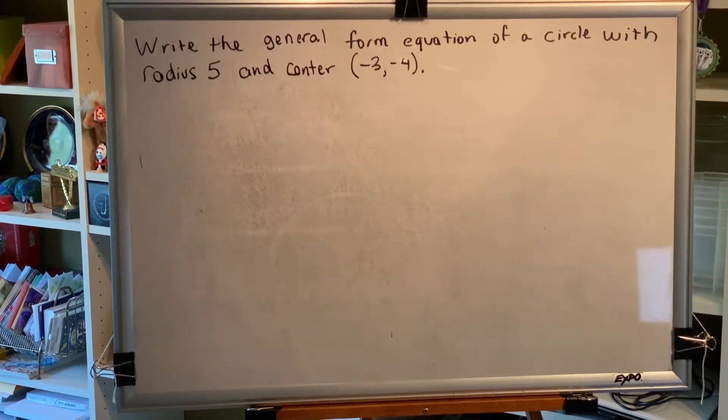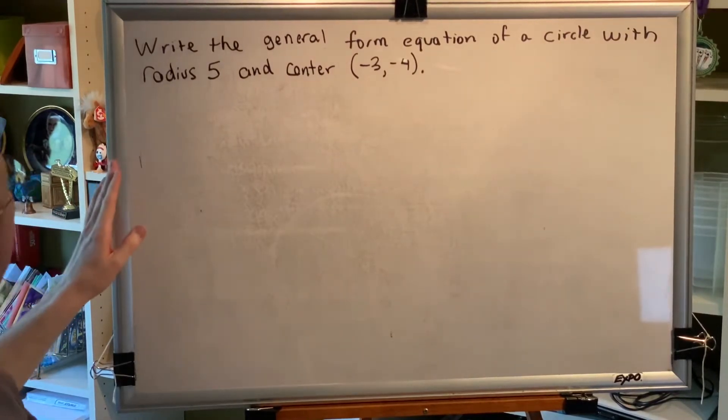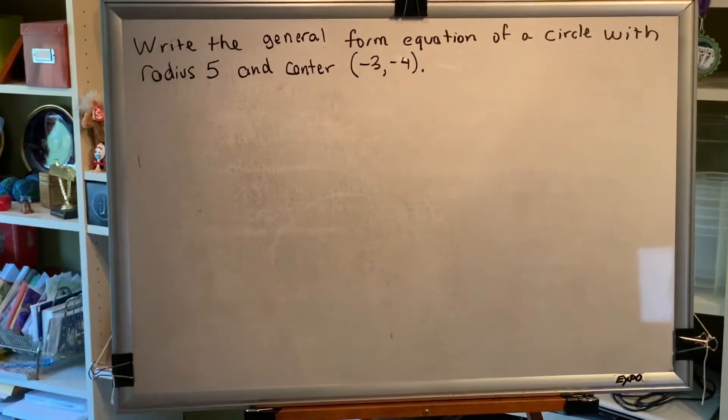The topic of this video is converting a circle from standard form to general form. Let's look at a problem. Write the general form equation of a circle with radius 5 and center (-3, -4).